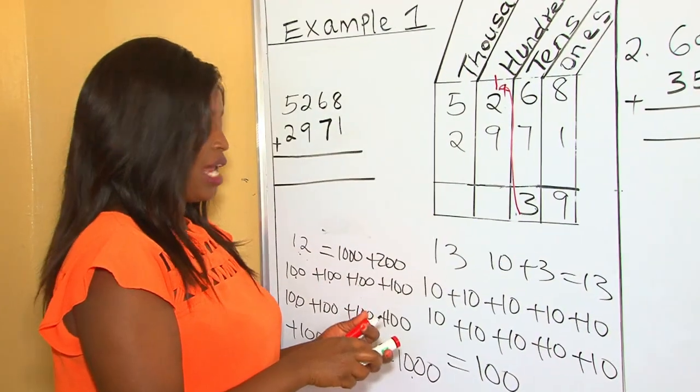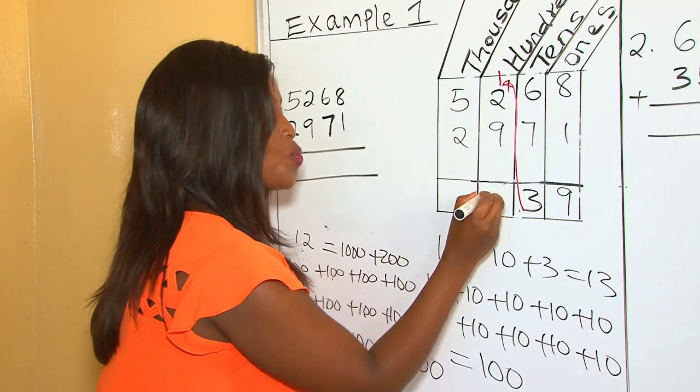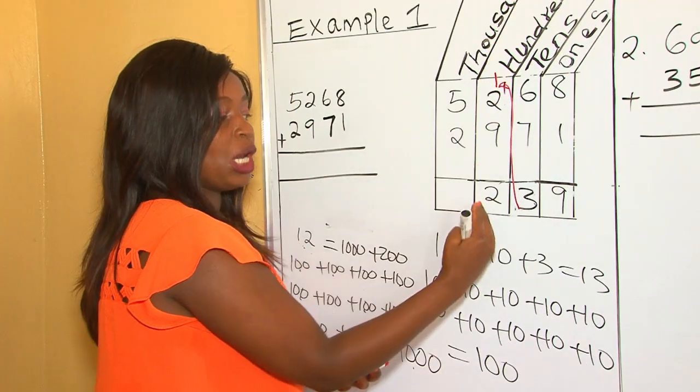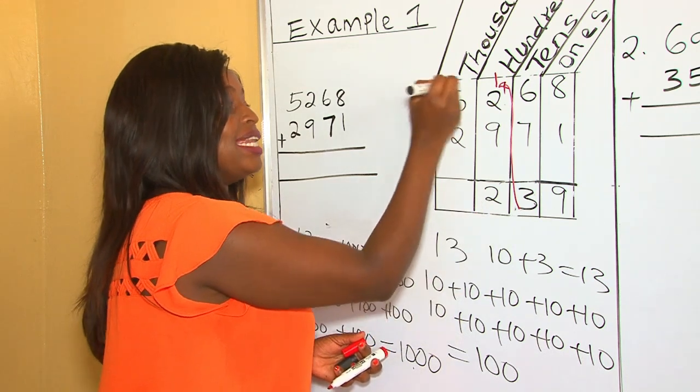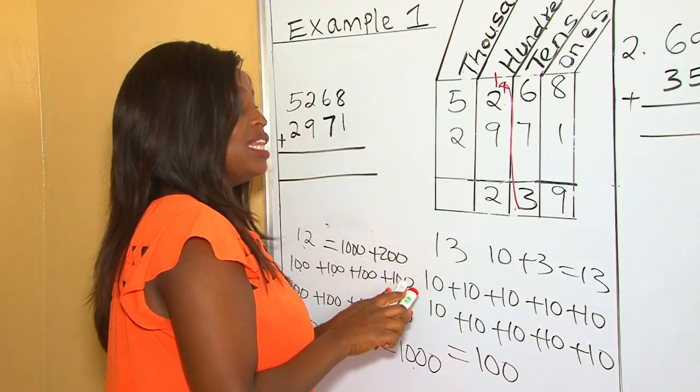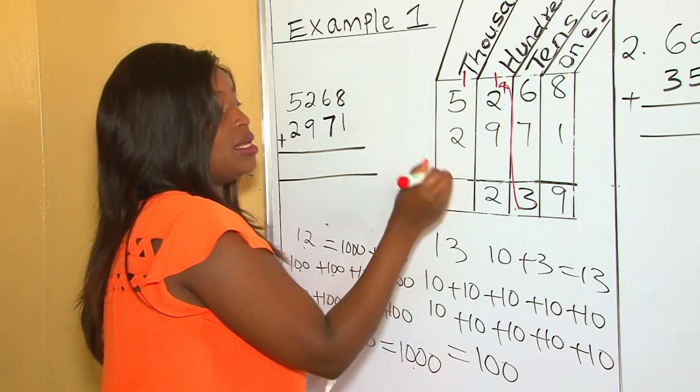And here, we record our 200s as 2. This column is a column of 100s. So we are recording 200s. And then we carry our 1000s to the 1000s side as one, as 1000.